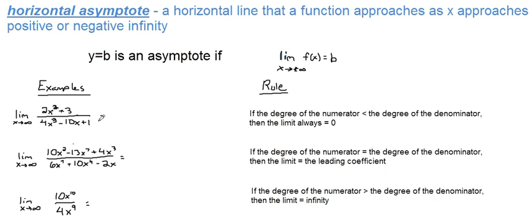Okay, so for the first one here, 2x squared plus 3 all over 4x to the third minus 10x plus 1. Now if you wanted, you can actually plug that into your graphing calculator, look what happens as the function goes to the right forever and see where this leveling off occurs. Well, based on a rule, I know that this is going to equal zero right away without doing any work. And here's the rule: if the degree of the numerator is less than the degree of the denominator, then the limit will always equal zero.